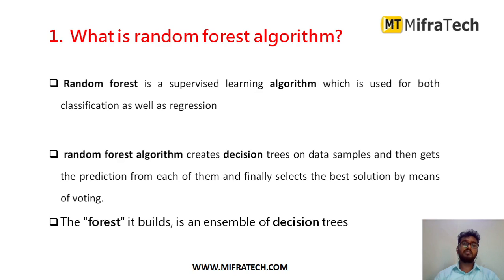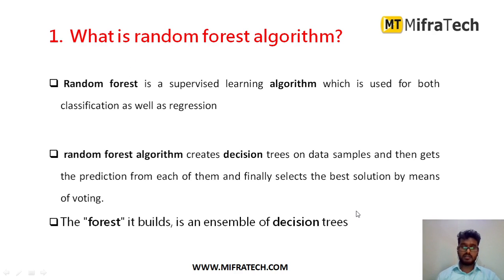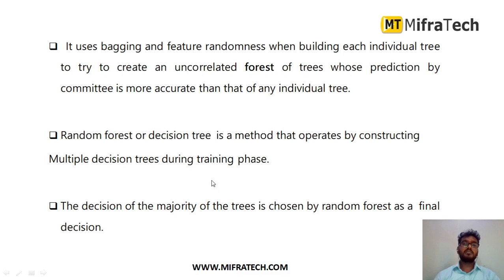The 'random' in Random Forest comes from the bootstrap dataset. In the given dataset, we randomly pick some data values and create a new dataset called the bootstrap dataset, also called bootstrap sampling. The main feature of bootstrap sampling is that it can contain repeated or duplicate values. That is why the algorithm is named Random Forest. It is an important ensemble learning technique that makes use of both bagging and feature randomness, extracting features of the dataset for creating decision trees — using data as nodes or branches depending on feature importance.